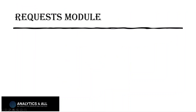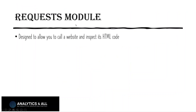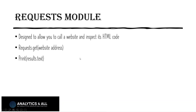This is kind of an introductory approach using the requests module. Simply, this will allow you to call a website and inspect its HTML code from Python. We're going to use two main commands here, which will be request.get with the website address, and then we're going to print the results — results.txt.